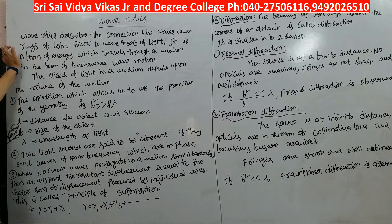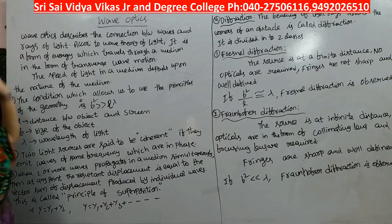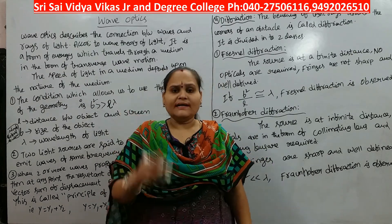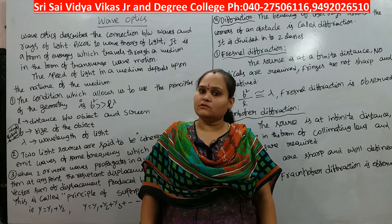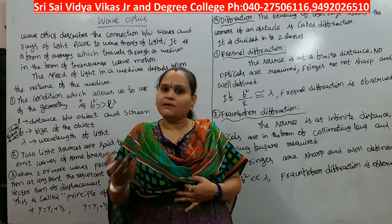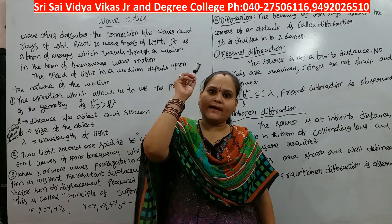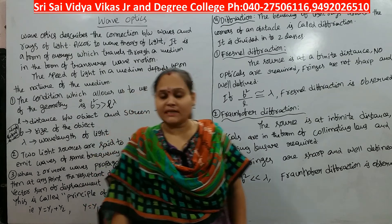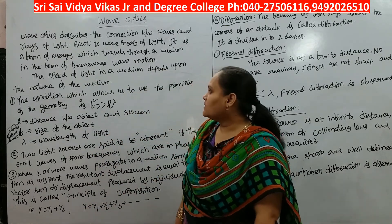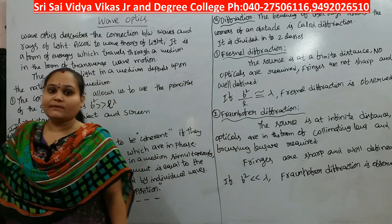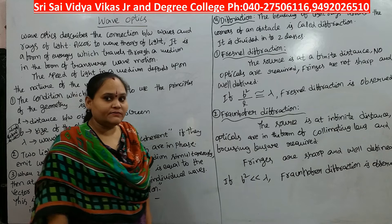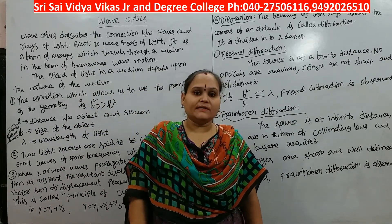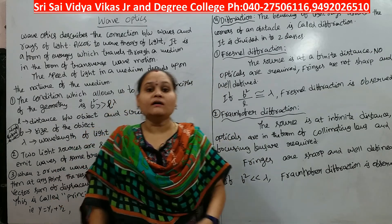The speed of light in a medium depends upon the nature of the medium. Light can travel in any medium, both with or without a medium. The speed of light in vacuum is 3 × 10⁸ meters per second, and this speed changes depending on the medium.